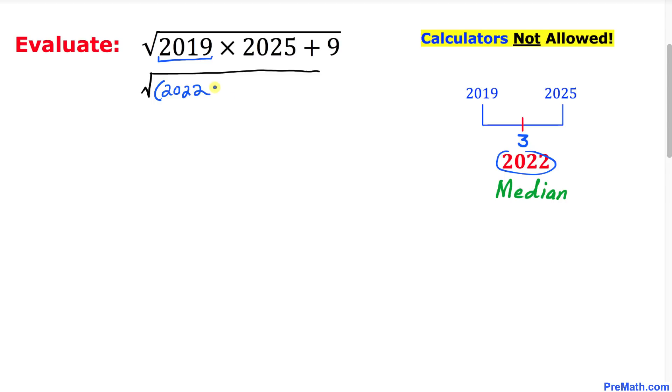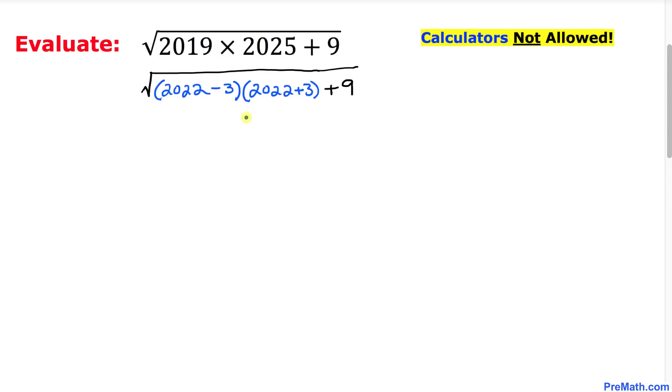Likewise, let's focus on this number 2025. This could be written as 2022 and then plus 3, and then plus this 9. Now we can see this part represents the product of sum and the difference.